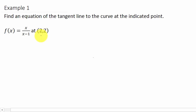So we're finding the equation of a line. Whenever you're finding the equation of a line, you need to know the slope of the line, and you have to have a point on the line. Well, we have a point on the line — the point (2, 2). Now we just need to find the slope. To find the slope, we can take the function, this f(x) here, find the derivative, and evaluate it at this point. That will give us the slope of the tangent line at the point (2, 2).